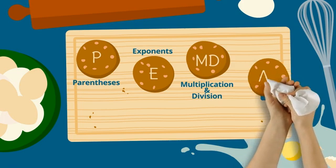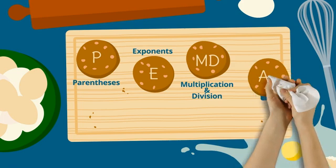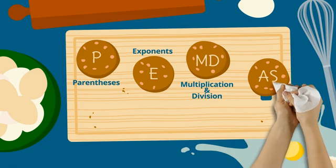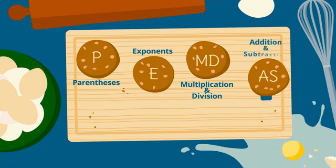Finally, A and S means addition and subtraction. They represent the last step in the order of operations. The rule about solving left to right also applies to addition and subtraction.